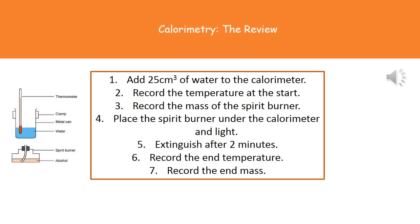If we look through our method then the first thing we actually need to do is measure a certain volume of water and add that to our calorimeter. Then we've got to record our temperature for the start and the mass of our spirit burner. Now the spirit burner is just that little glass item that holds the liquid fuel. Once we've got that we place our spirit burner under the calorimeter and we're going to light that and leave that burning for a fixed period of time say two minutes.